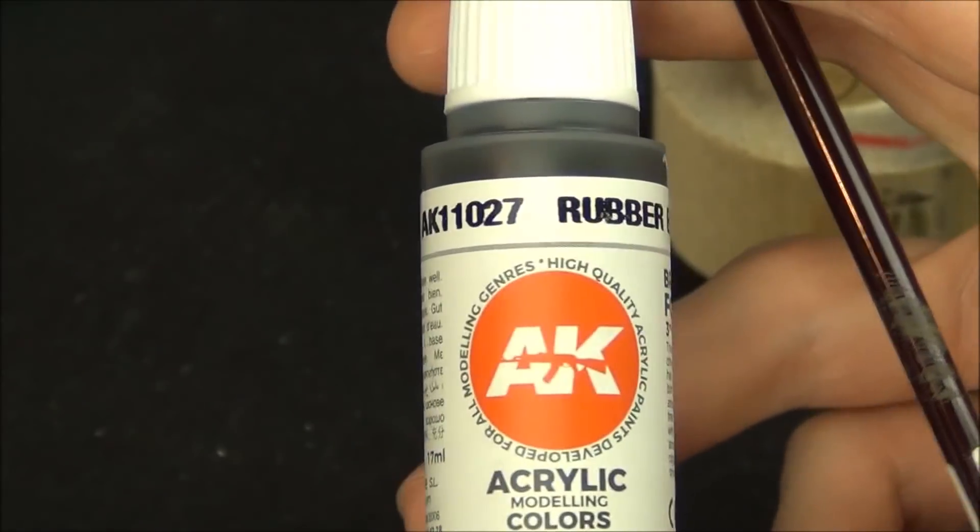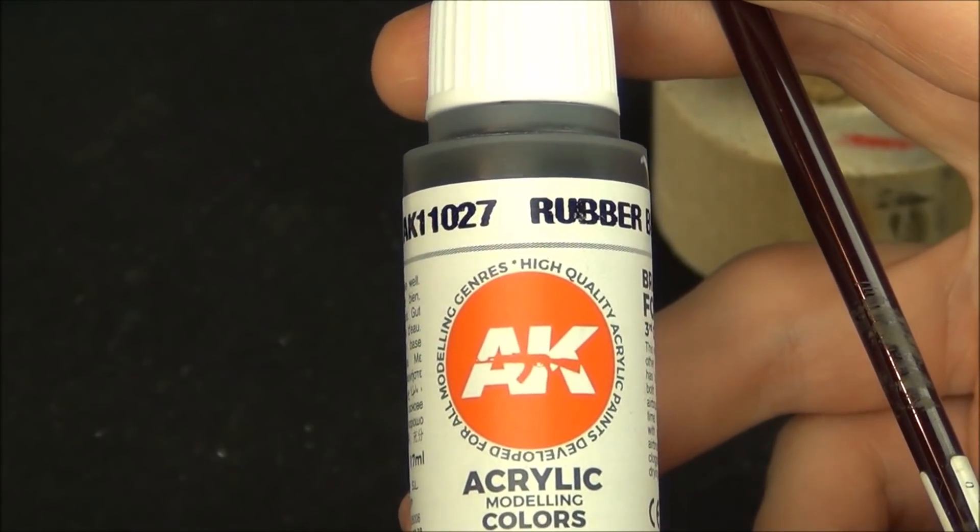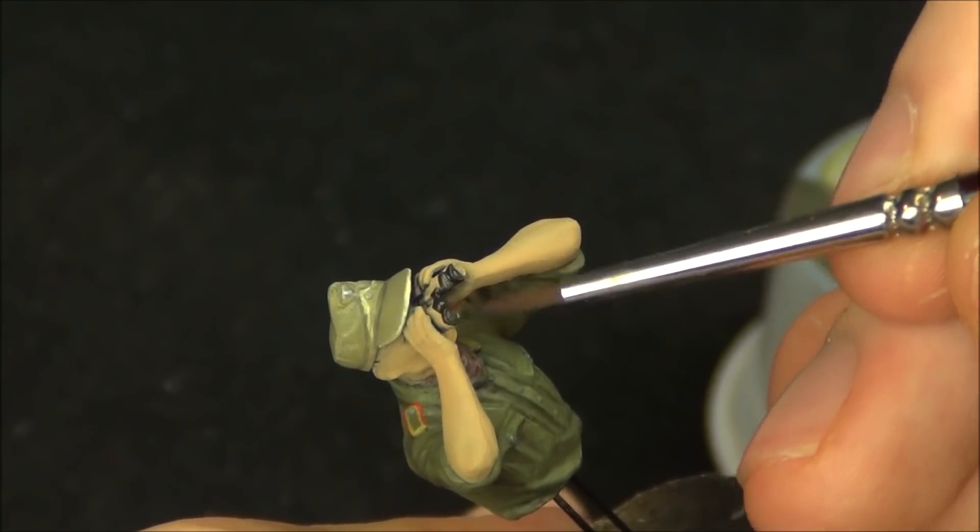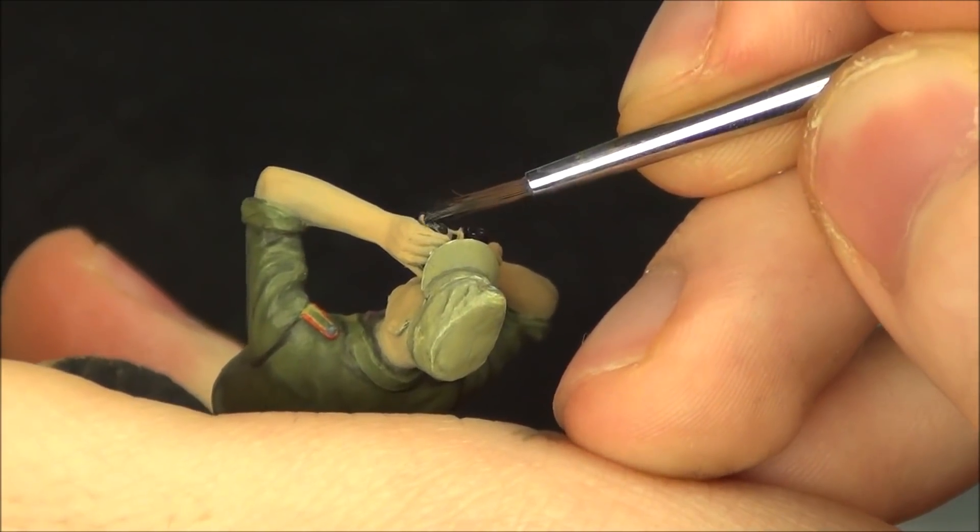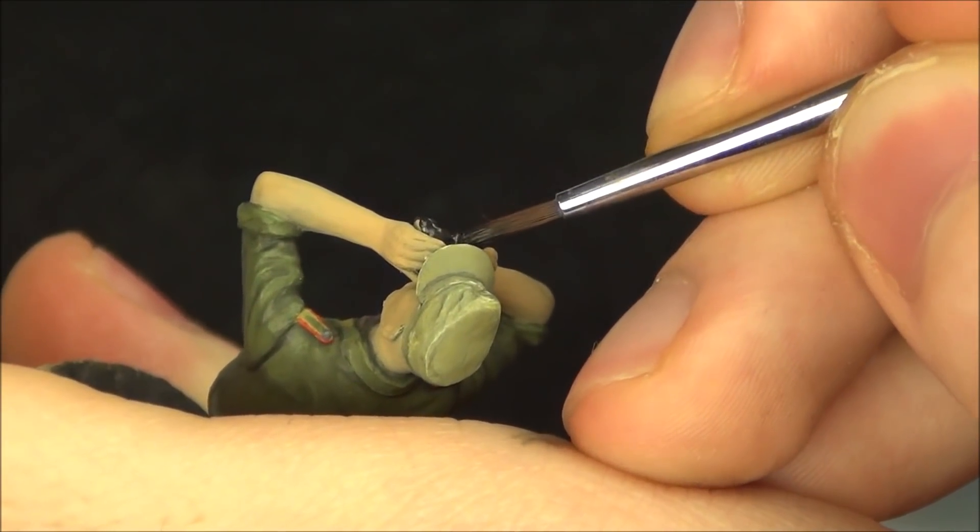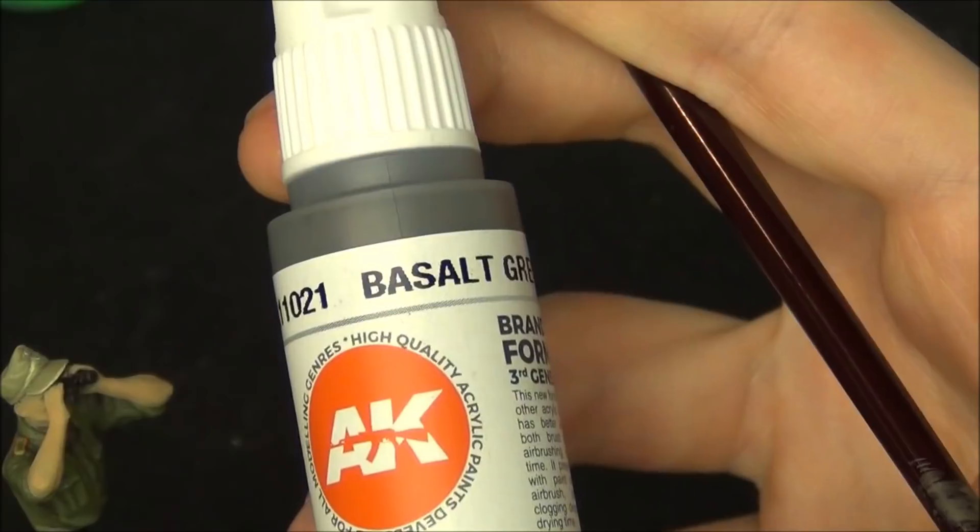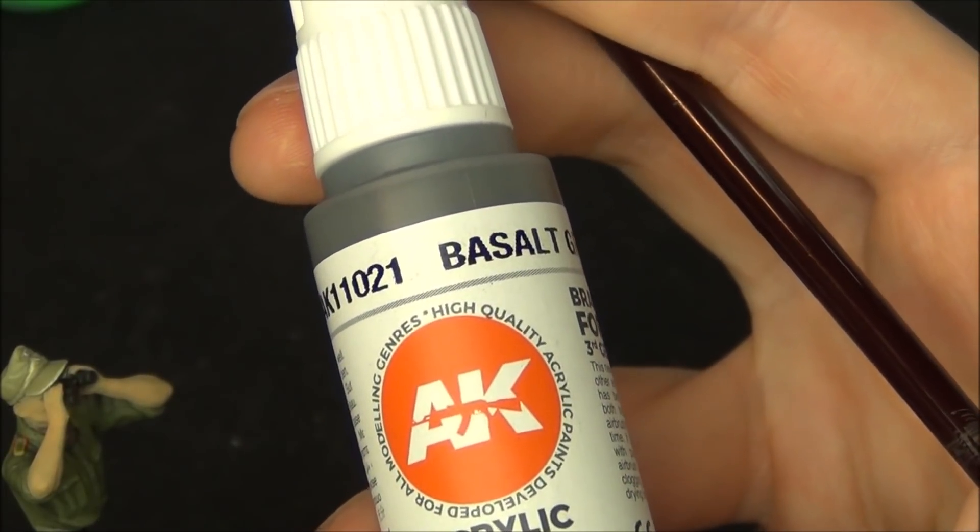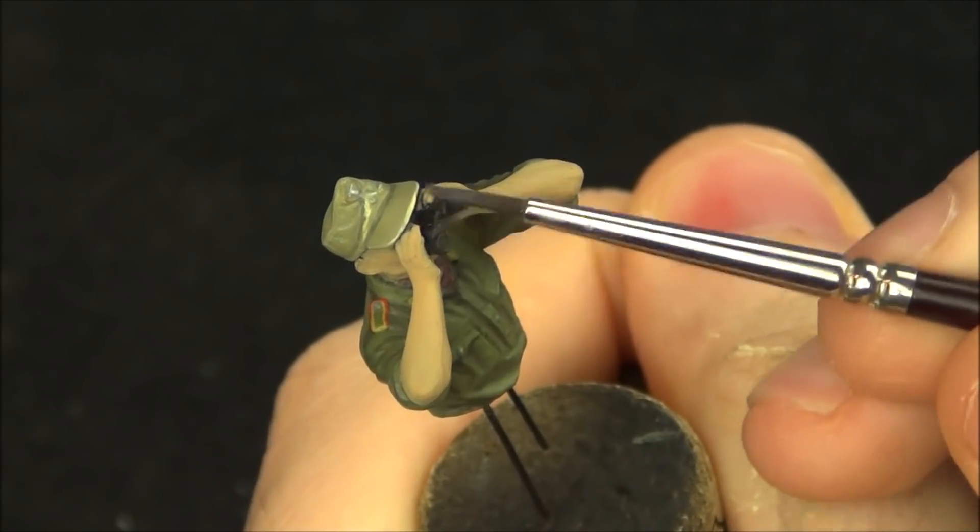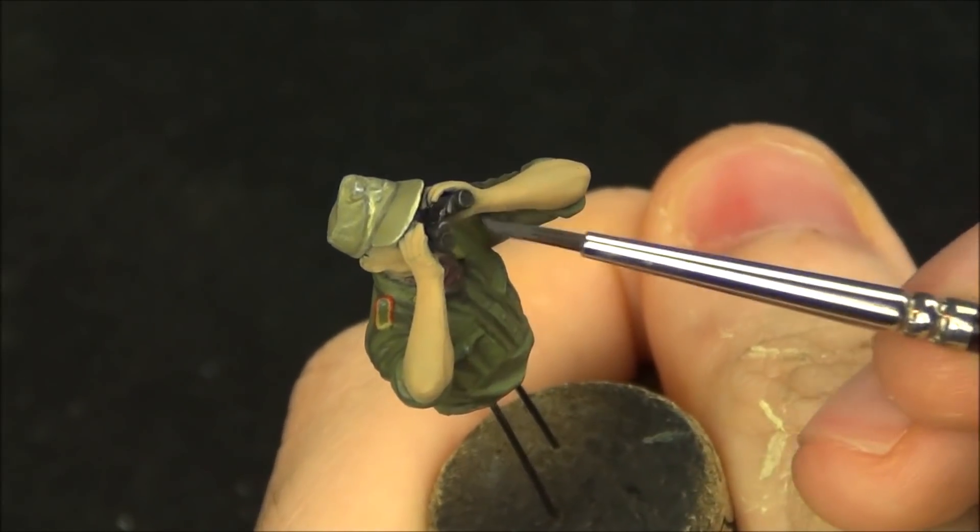I'm going to use AK rubber black as a base color for the binoculars. Again as with all the paints I've been using so far here, this is thinned with a little bit of water. I'm now going to use the Basel gray color we used previously and we're going to dry brush this to catch the highlights and the details of the binoculars to make them pop out.